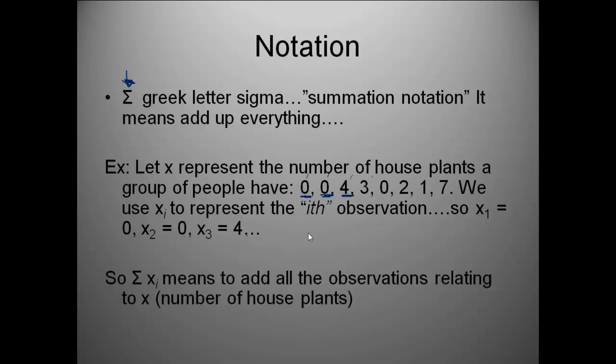So if we look at how summation notation would be used, if we saw sigma x sub i, what that means is to add up all of the observations relating to x. So we would add up x sub 1, x sub 2, 3, x sub 4, x sub 5, x sub 6, x sub 7, and x sub 8. We would add them all up. That is notation that we're going to be using. So when you see sigma, that means to add everything up.